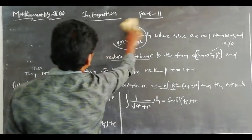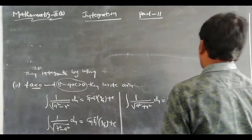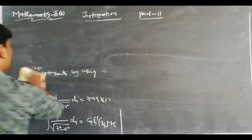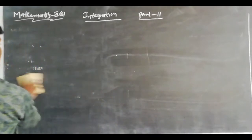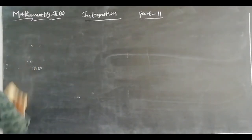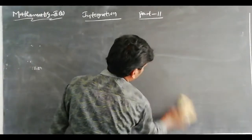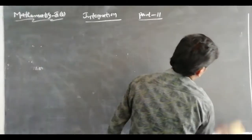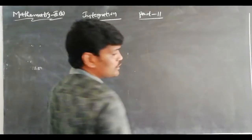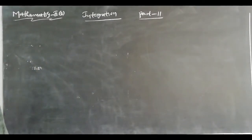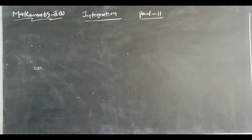To integrate 1/√(ax² + bx + c), where ax² + bx + c is an irreducible polynomial, we solve two cases. If a is positive, write as a(x + α)² + β². If a is negative, write as minus a(β² - (x + α)²).